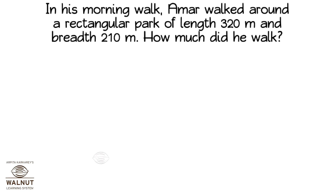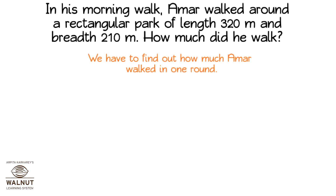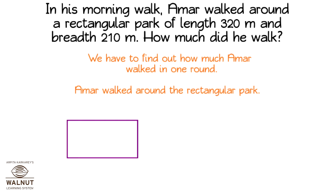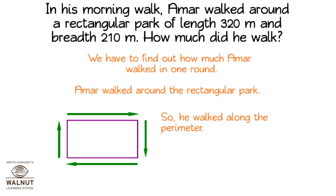In his morning walk, Amar walked around a rectangular park of length 320 meters and breadth 210 meters. How much did he walk? We have to find out how much Amar walked in one round. Amar walked around the rectangular park, so he walked along the perimeter. That means we have to calculate the perimeter.